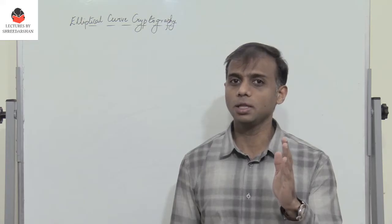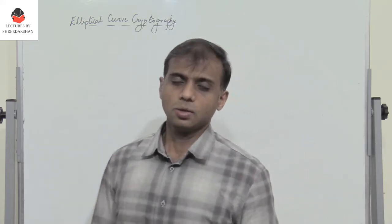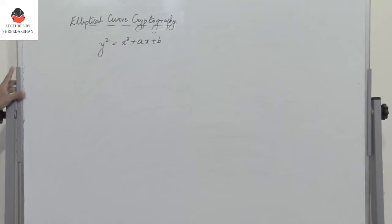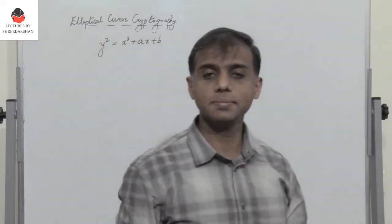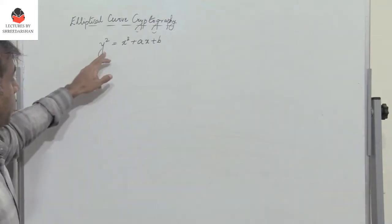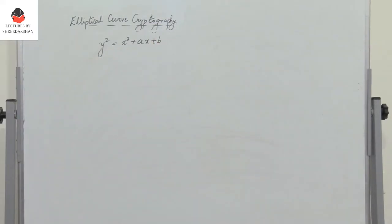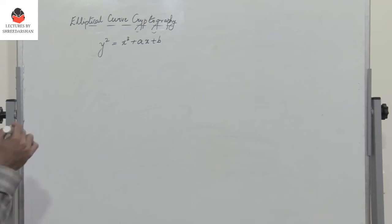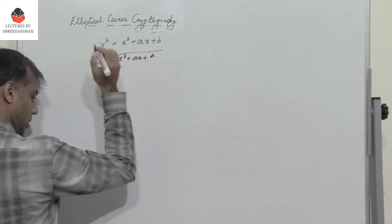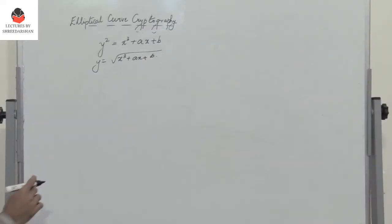In this lecture session, we shall see how we can find the points on the elliptic curve. Elliptic curves are not ellipses. Elliptic curves are curves defined by the equation y squared equals x cubed plus ax plus b. Now elliptic curves can be defined over real numbers or over primes. Considering this equation, y equals the square root of x cubed plus ax plus b, which means the elliptic curve is symmetric about y equal to 0.